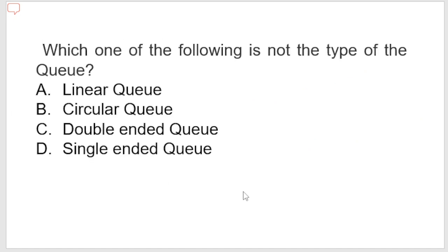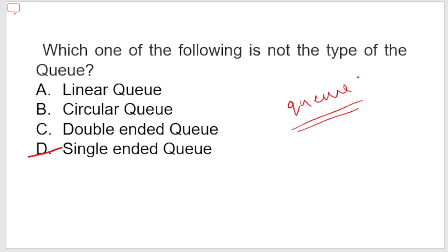Next: which one of the following is NOT a type of queue? Options are linear queue, circular queue, double-ended queue, and single-ended queue. The answer is single-ended queue, because a queue must have at least two ends — one for insertion and one for deletion. So a single-ended queue is not possible. That's all for today; we will come with new questions tomorrow. Study well and thank you very much.